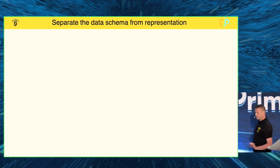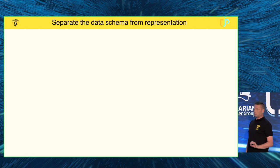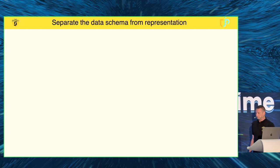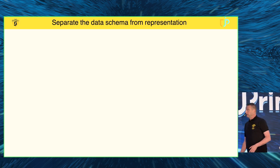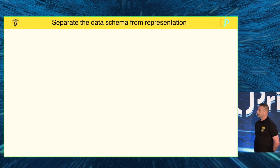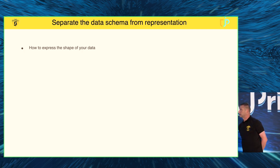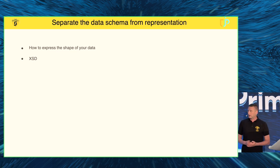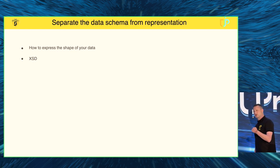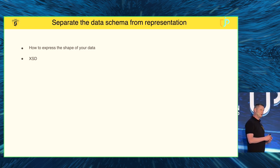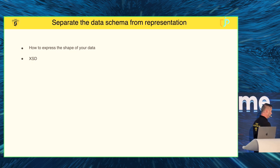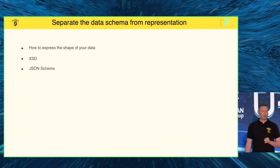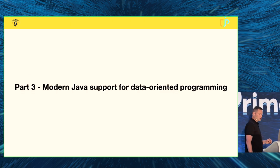The last principle is perhaps the most unclear: separating data schema from data representation. Think untyped languages like JavaScript, where the type of a variable is not defined upfront. This is all about expressing how to shape your data. Think XML: if we have XML, we'd use an XSD to describe the type of each field, possible values, and whether a field is mandatory. We could do something similar with JSON Schema. Those are the four principles.